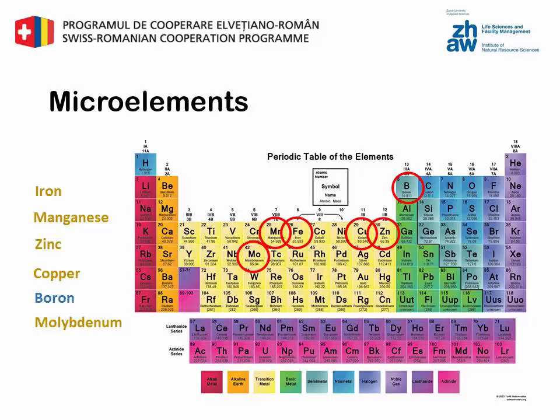Boron is involved in the meristem growth phase and in the transport and utilization of carbohydrates; it also participates in the synthesis of protein and the metabolism of nucleic acids. Molybdenum occurs in enzymes important in nitrate reduction and in nitrogen fixing.